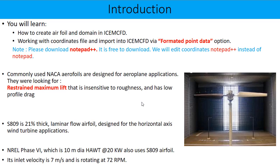One particular example is the NREL Phase 6, which is a 10-meter diameter horizontal axis wind turbine producing 20 kW and using the S809 aerofoil as the primary aerofoil at the 75% span location. The base and tip have different aerofoils but from the same series, and the blade starts from 20% of the span, which is the length of the blade. This wind turbine operates at 72 RPM.